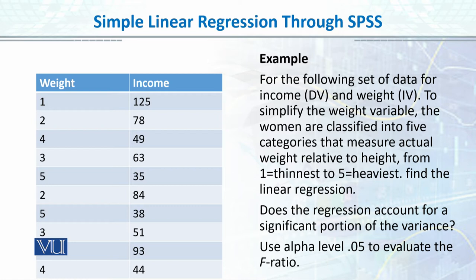To simplify the weight variable, women are classified into five categories — from 35 kg up, divided into five groups where one is the thinnest and five is the heaviest. The task is to find the linear regression and determine whether the regression accounts for a significant portion of the variance — essentially, does weight explain income? We check at the 0.05 significance level. Let's move on to SPSS and do it.